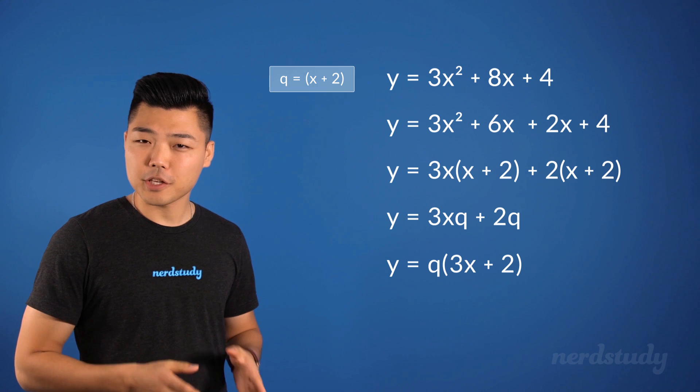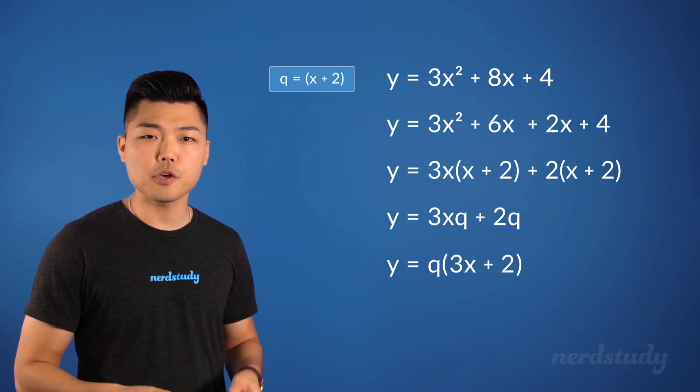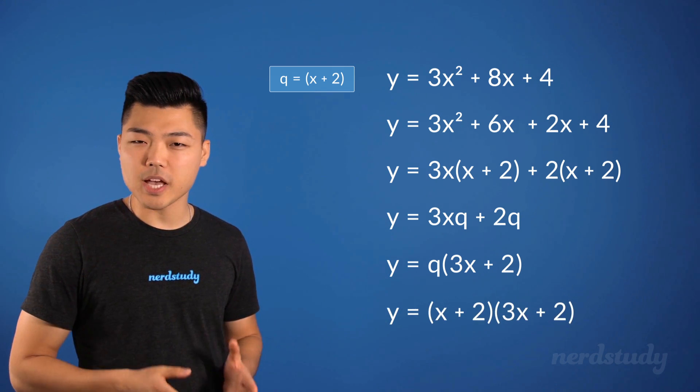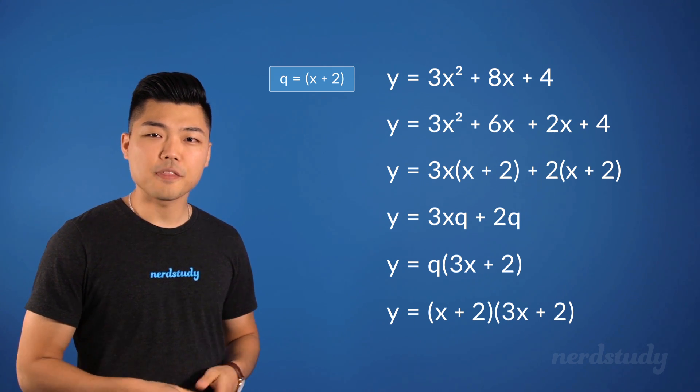And since we remember that q is equal to x plus 2, we can just replace q with it to get a final answer of y equals x plus 2 times 3x plus 2. And that's it.